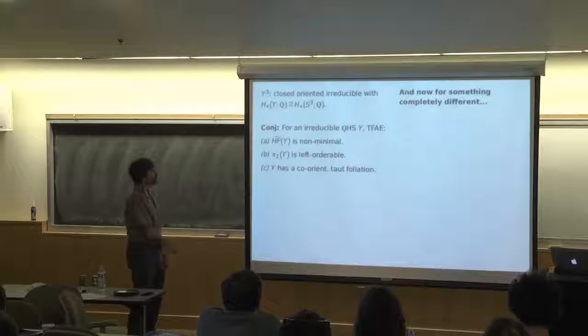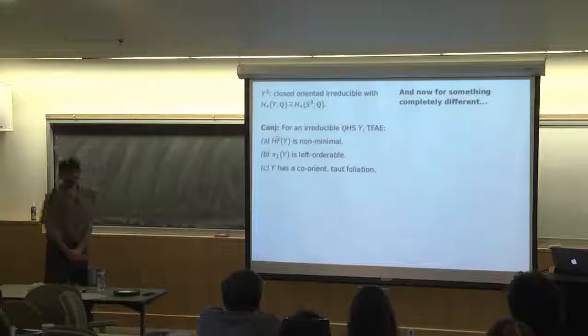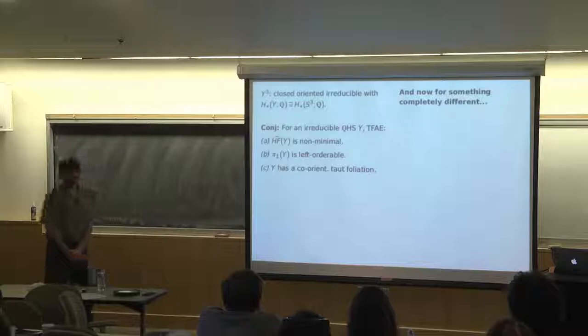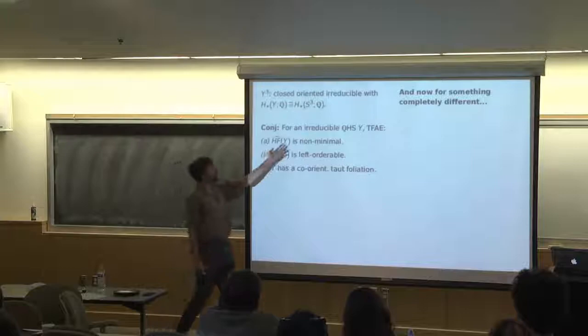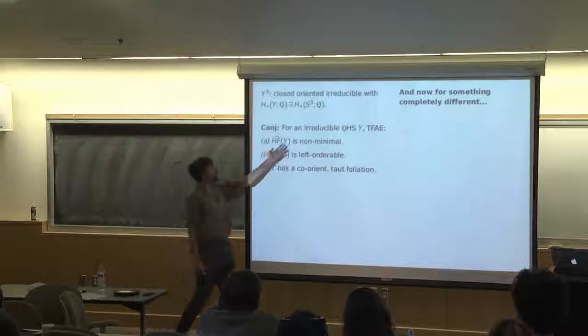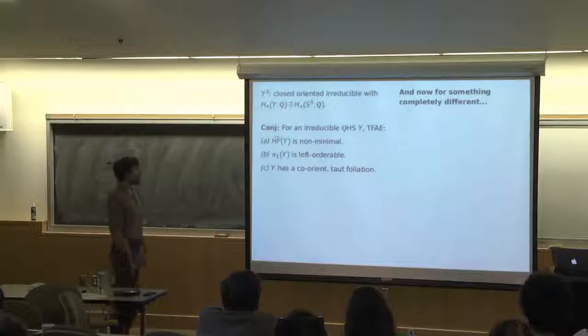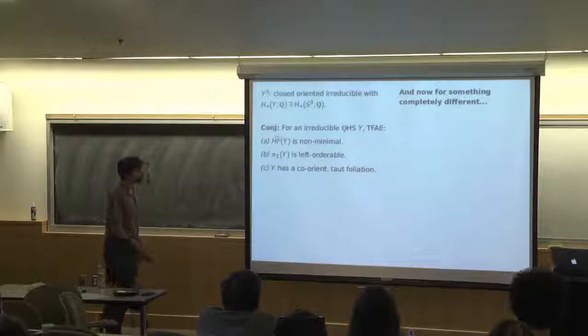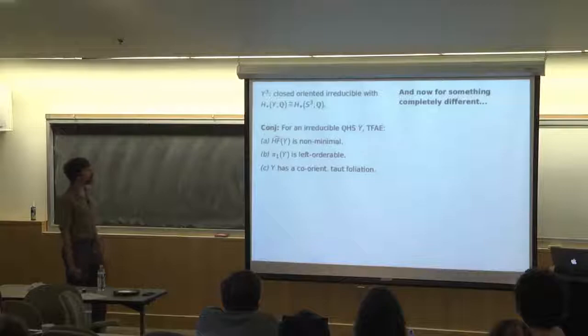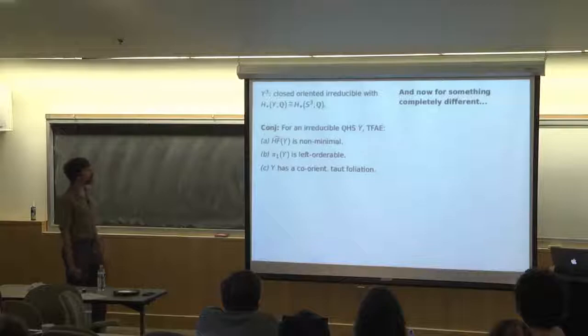The context is that I'm always going to be thinking about a closed, irreducible three-manifold whose rational homology is the same as the three-sphere — so a rational homology sphere. The conjecture I alluded to is the following. For an irreducible rational homology sphere, the following three things are equivalent: first, that the Heegaard Floer homology is non-minimal; second, that the fundamental group of Y is left-orderable; and the third is that Y has a co-orientable taut foliation.